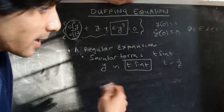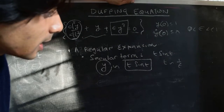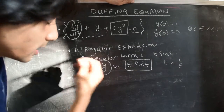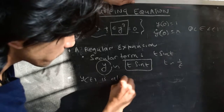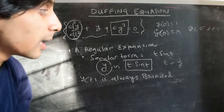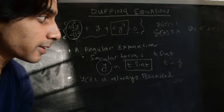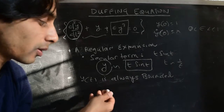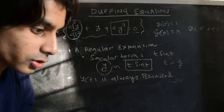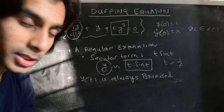What this tells us is that as time becomes larger and larger, or approaches infinity, the solution y will become unbounded with time. But in another video we saw that in fact the solution y(t) of the Duffing equation is always bounded for all times t. So the regular perturbation expansion, at least to order epsilon², is not consistent with the fact that y should always remain bounded.